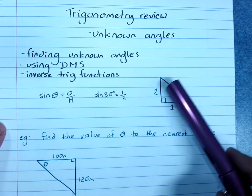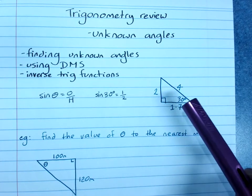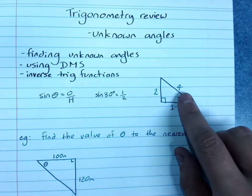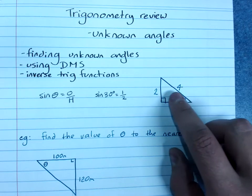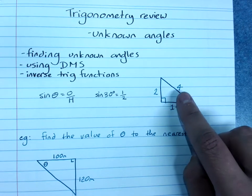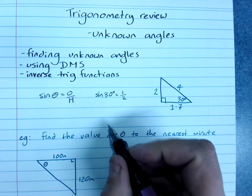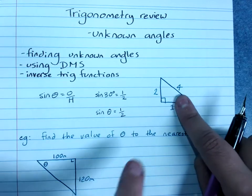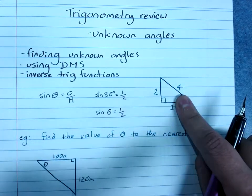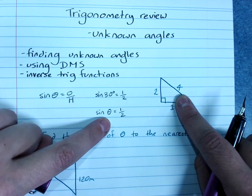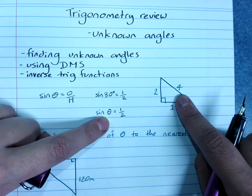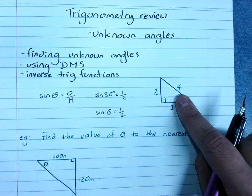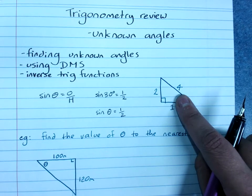This information is useful for finding an unknown side, but it's also useful for finding an unknown angle. Imagine I didn't have this 30 degrees here, and all I knew was that sine of the angle was a half. I want to find out just the angle on its own.